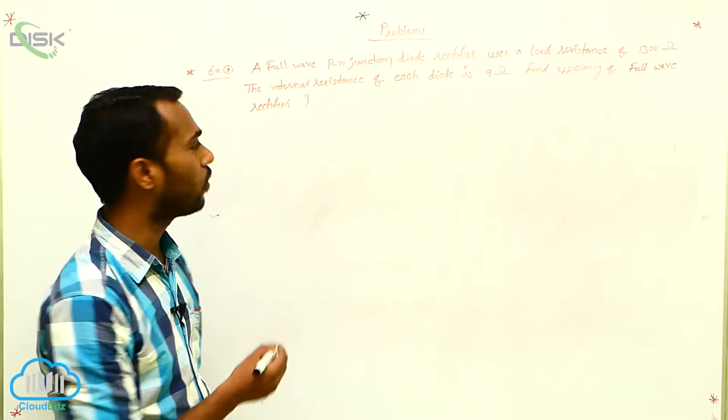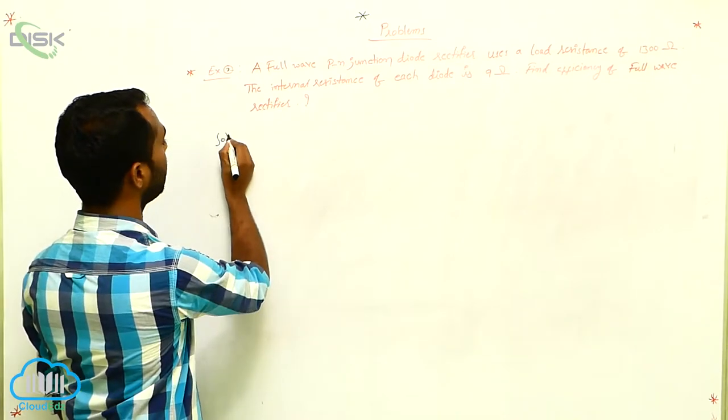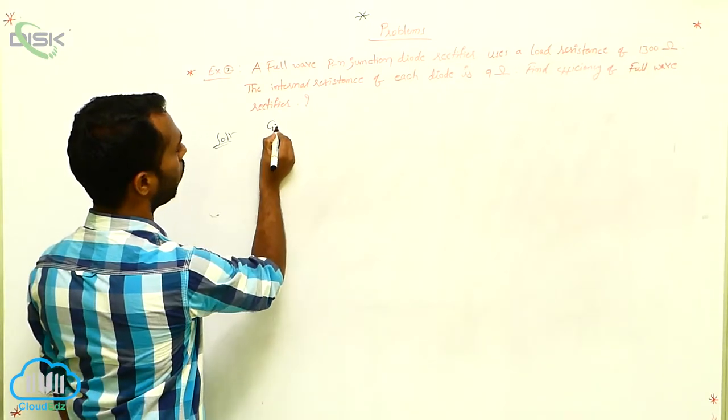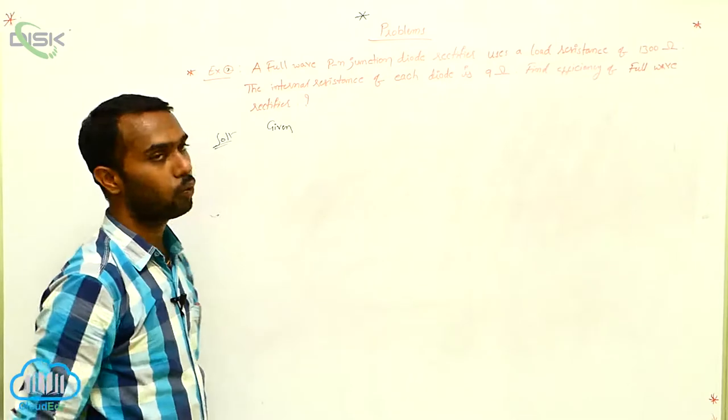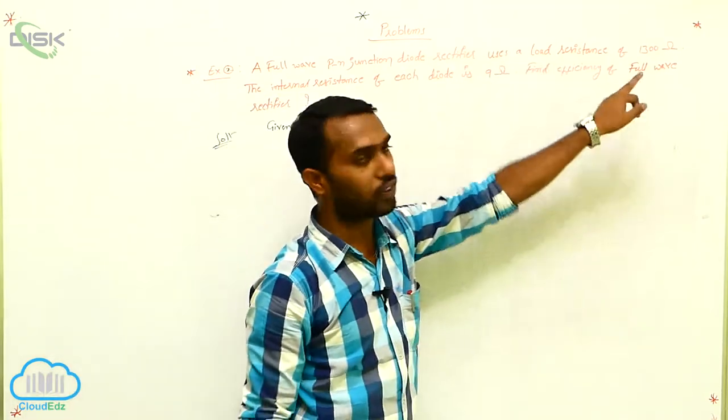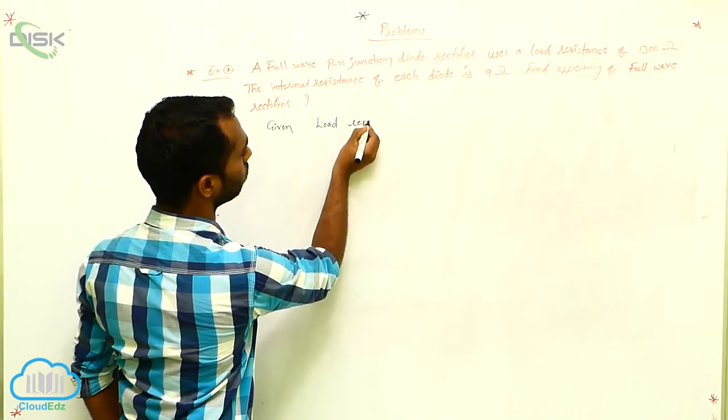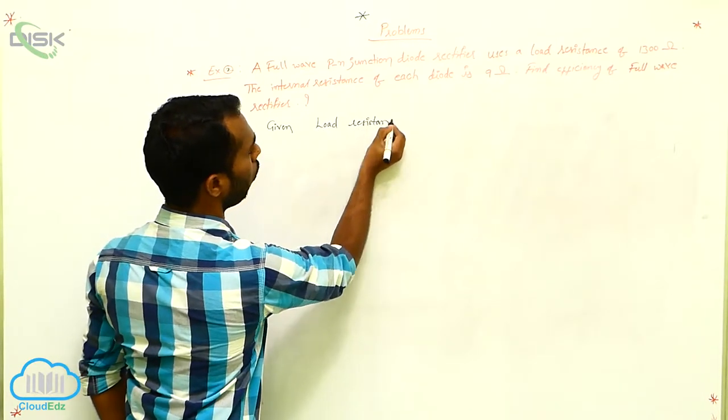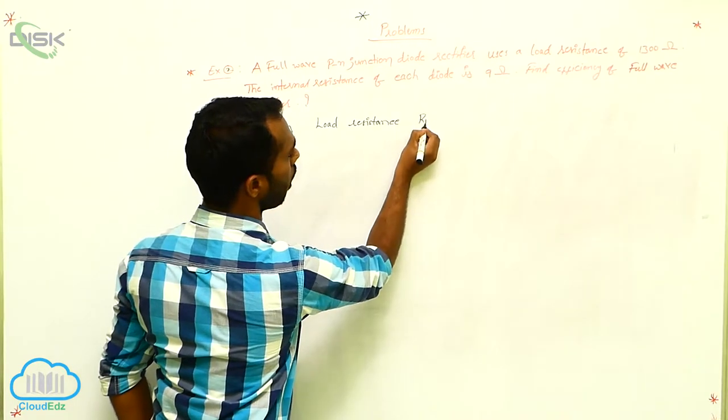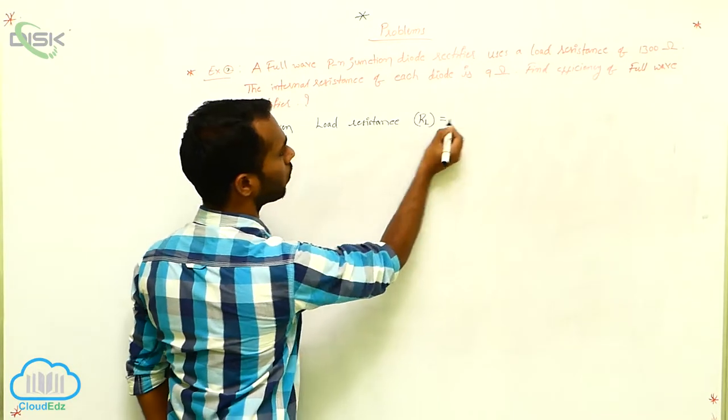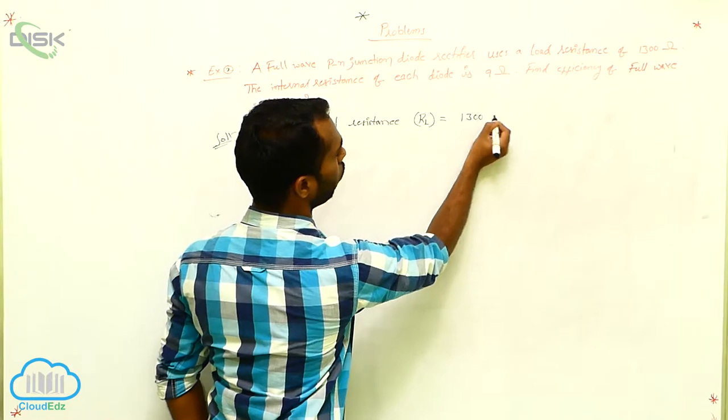Again, we have to write given values. Here, I am writing given values. Given, first one: load resistance. Load resistance RL is equals to 1300 ohms.